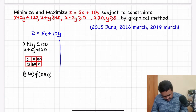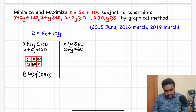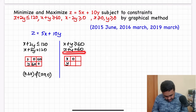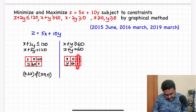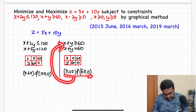Now I will consider the second constraint: x + y ≥ 60. Treating the inequality as equality, x + y = 60. The points (0, 60) and (60, 0) lie on this line.